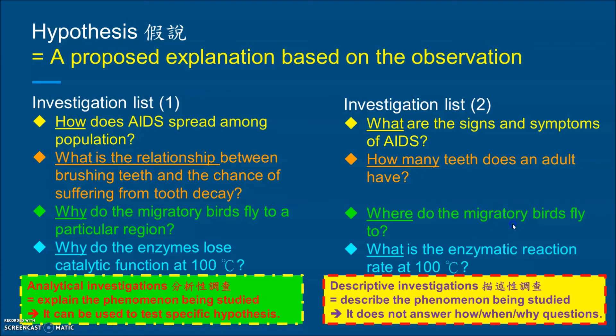For descriptive investigations, do we really need to make a hypothesis? How many teeth does an adult have? We just count them — one, two, three... 32 is the answer. Where do migratory birds fly to? We set up a GPS and we know. We do not really need to make a hypothesis for these.